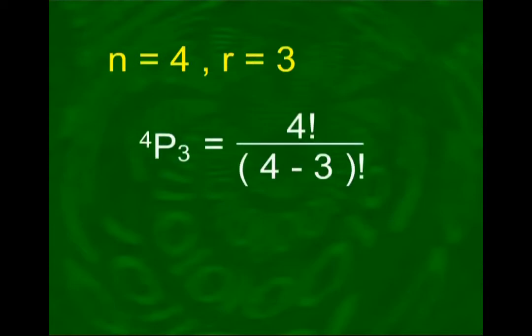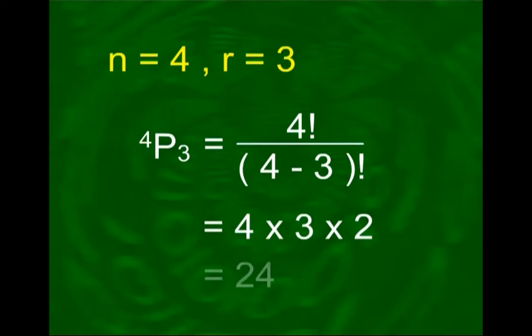The rule of permutations gives us exactly the same answer in a very convenient manner. NPR equals N factorial over (N minus R) factorial. In this example N=4 and R=3, so we get 4 factorial over (4−3) factorial, which is 4×3×2 = 24.